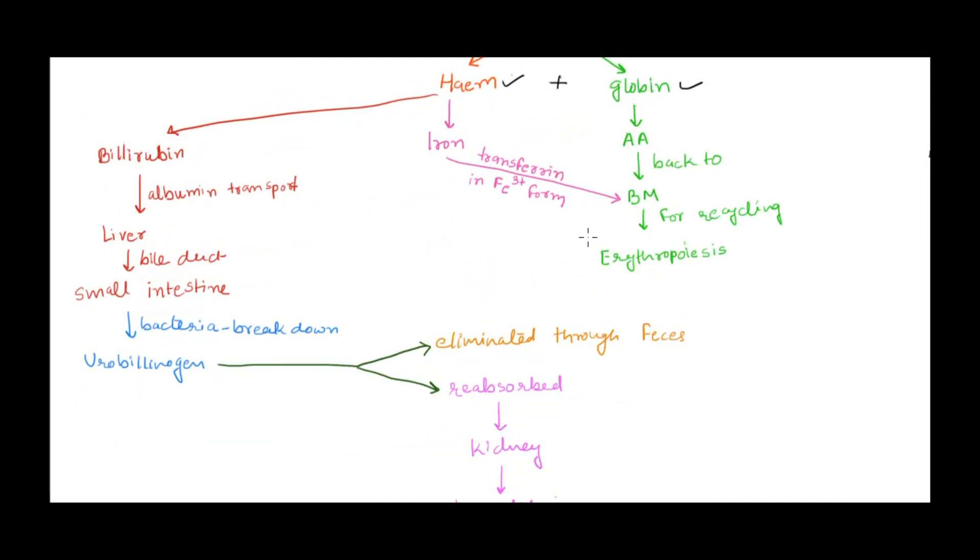Let's look at the globin part. Globin is nothing but amino acid, a chain of amino acids, so it breaks down into amino acids. Amino acids can be recycled, so they'll be taken back to bone marrow where they can be recycled for the next erythropoiesis cycle, which happens in bone marrow.